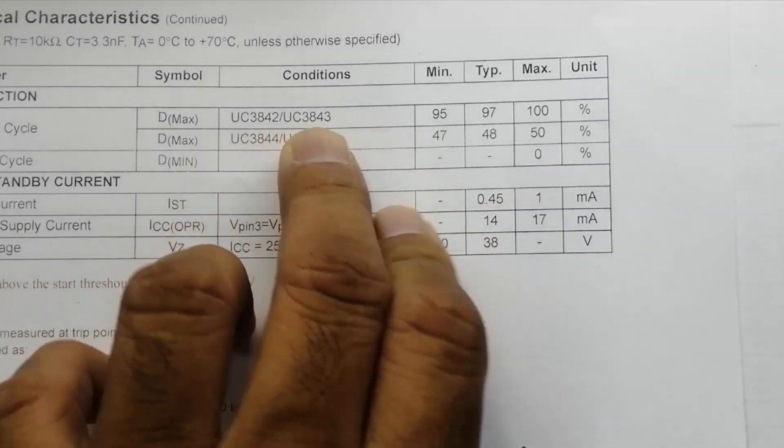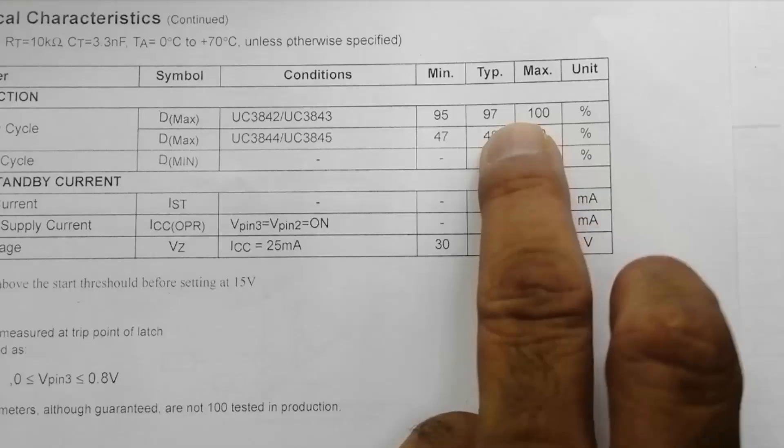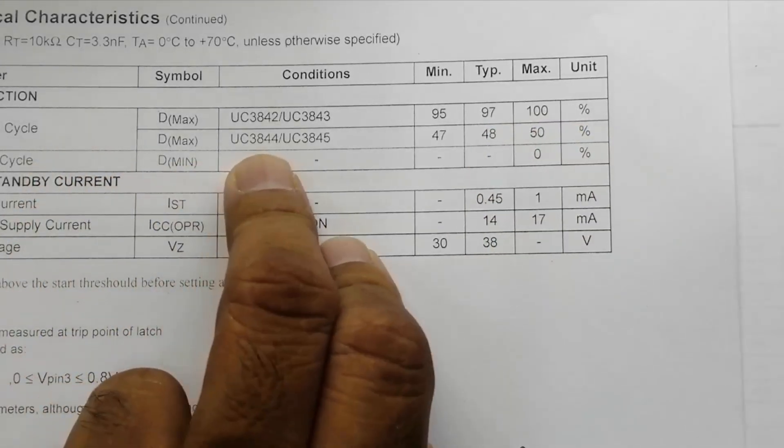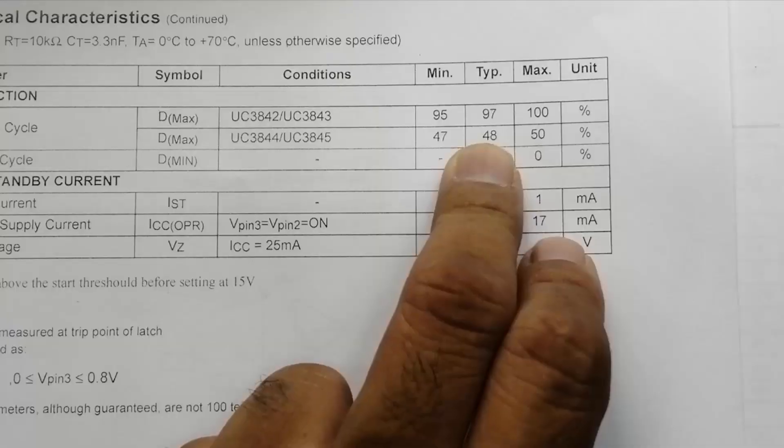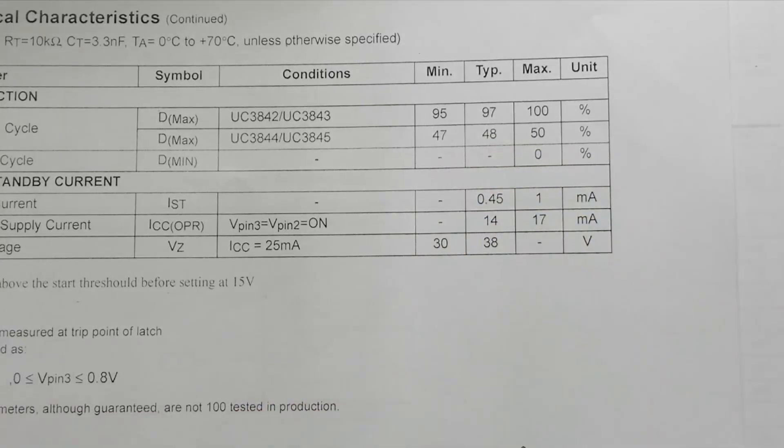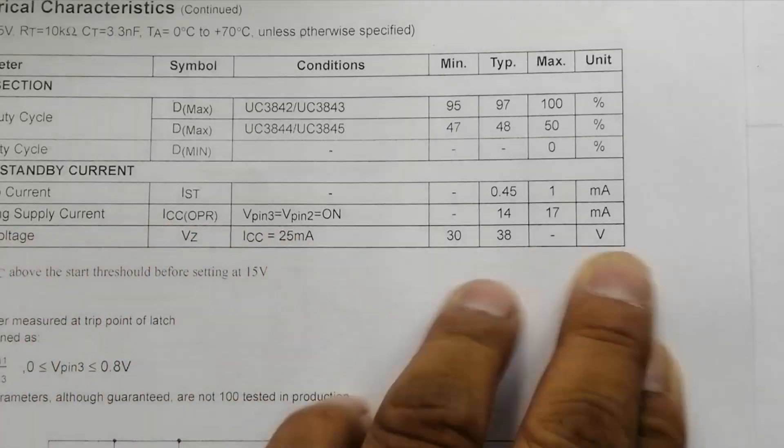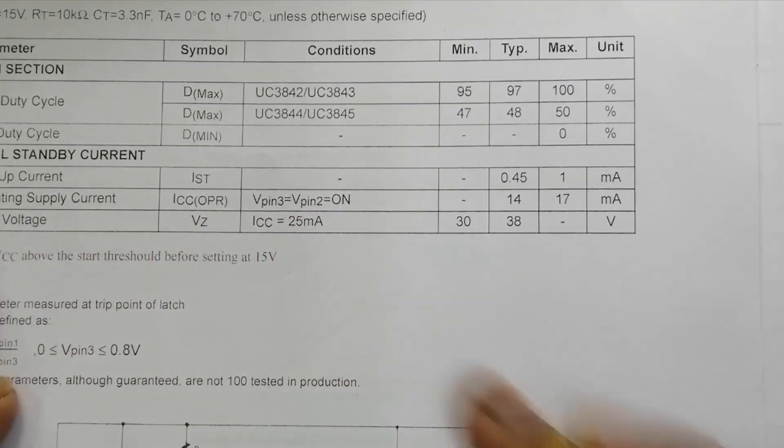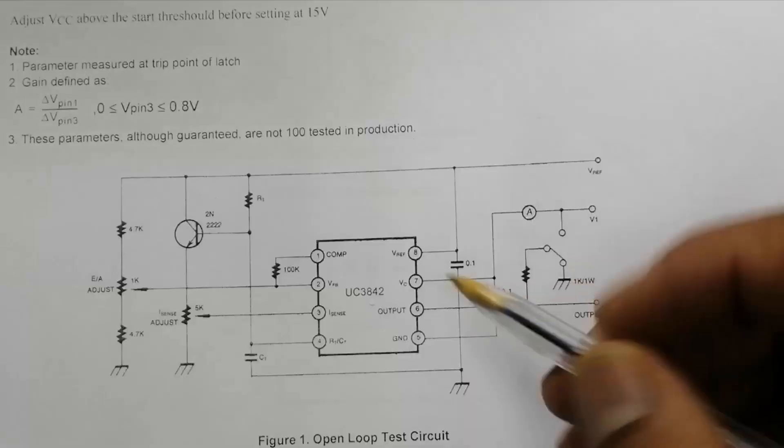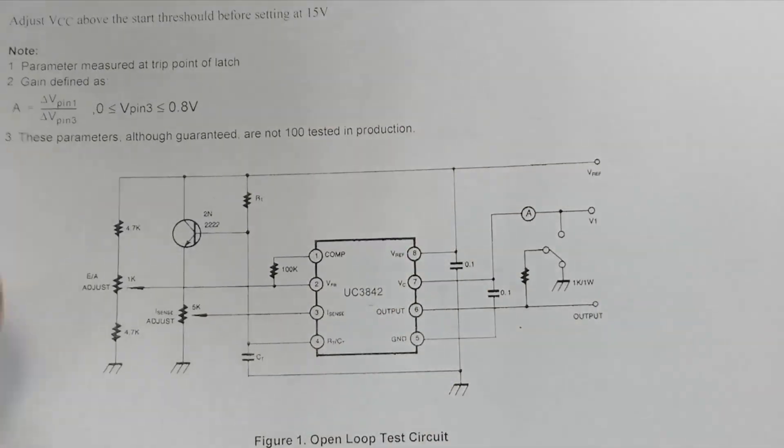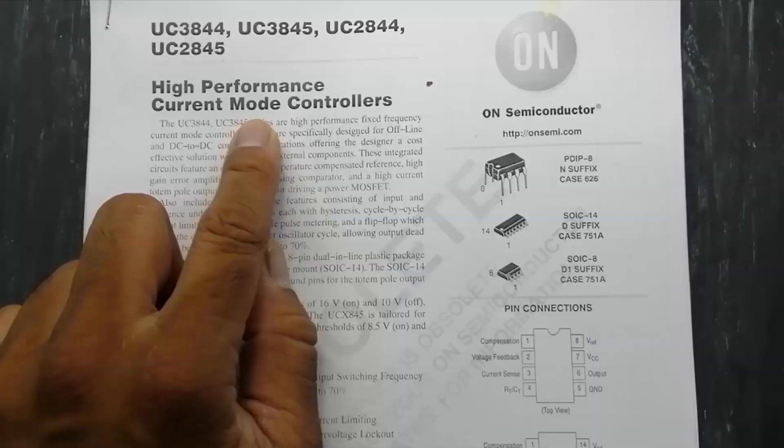For 3842 and 3843, 97 percent typical duty cycle. And 3844, 3845 have 48 percent to 50 percent duty cycle. Startup current, operating supply current, zener voltage, and here it is standard test condition, typical test condition, high performance current mode controller.